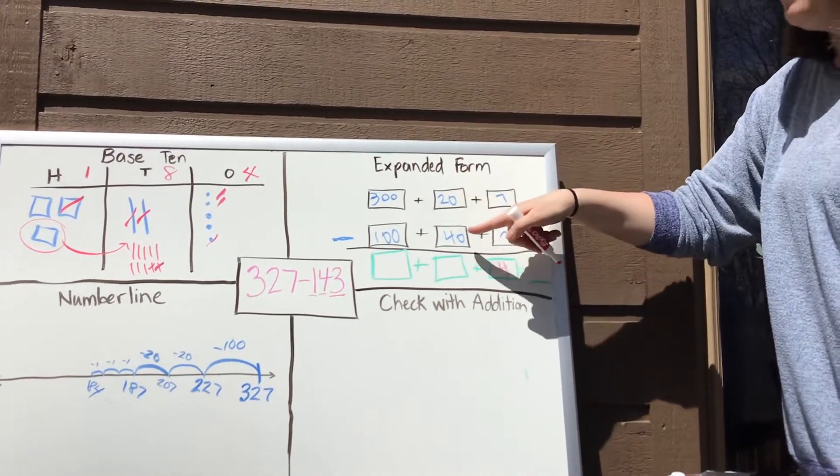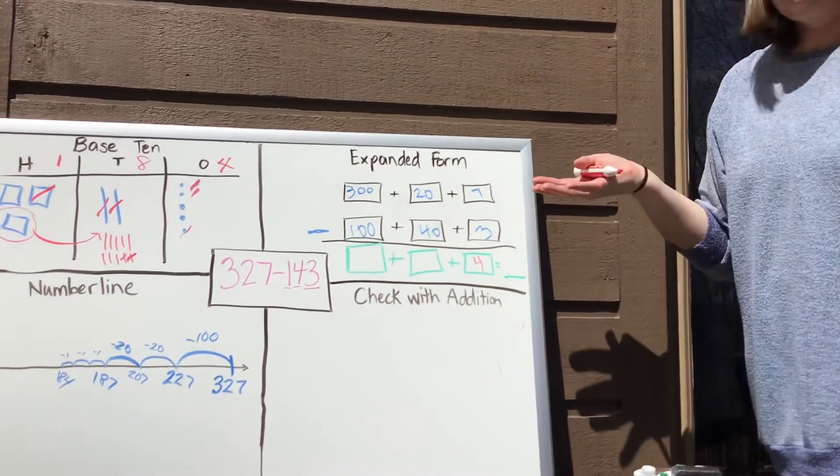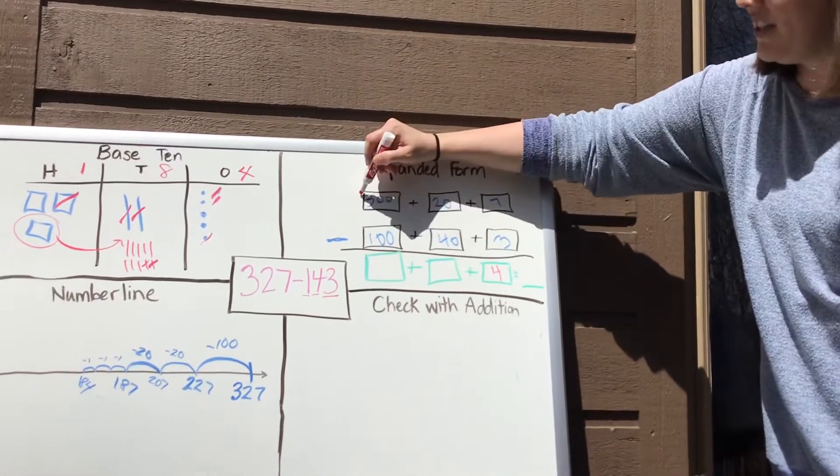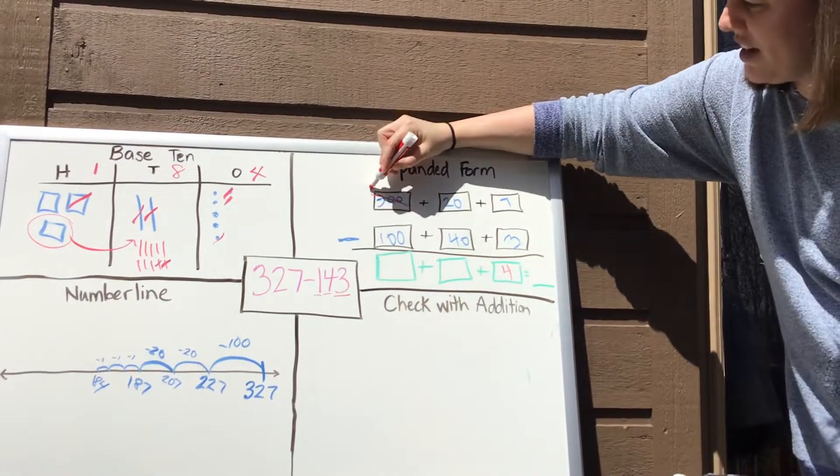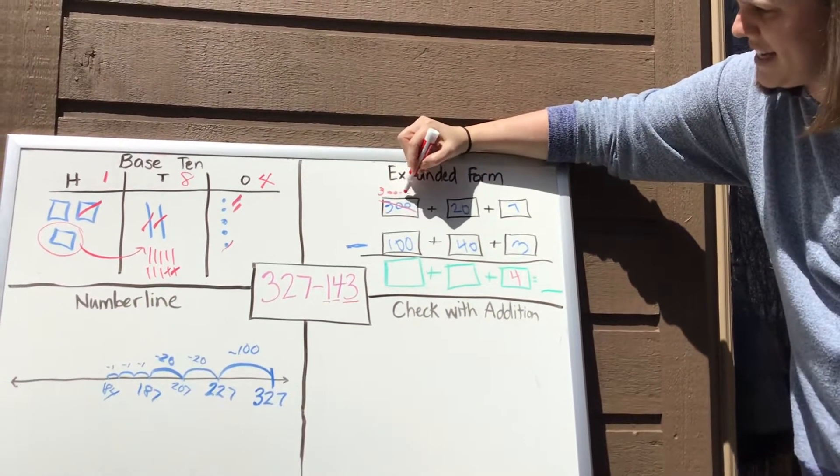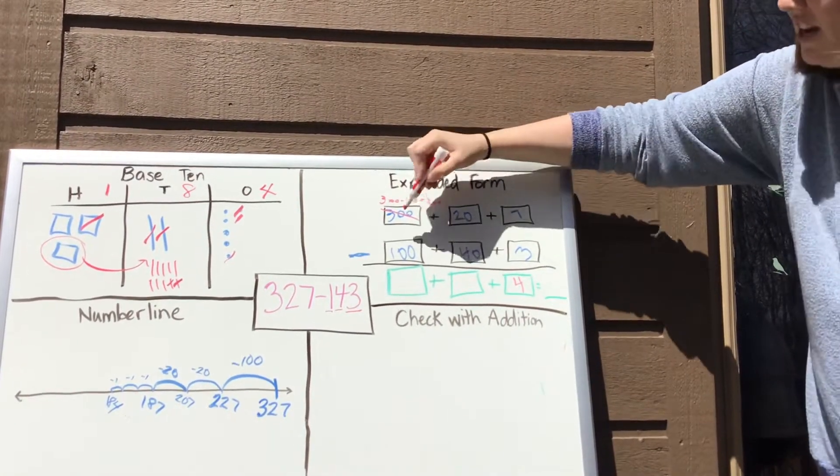Then we're going to say 20 minus 40 or 2 tens minus 4 tens. We can't do that. So we're going to come over here to this 300. And we're going to think 300 minus 100. And that's going to leave us with 200 here.